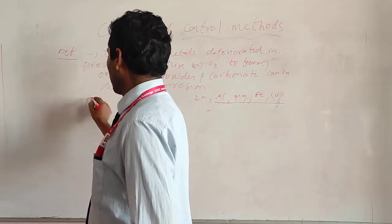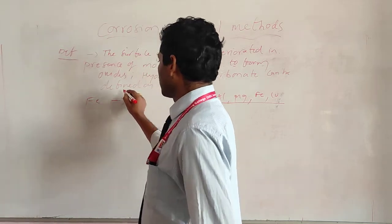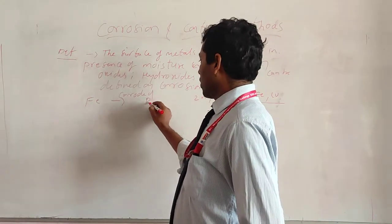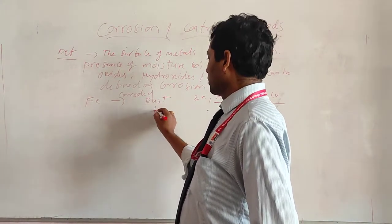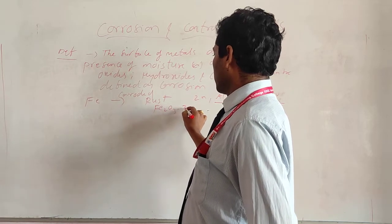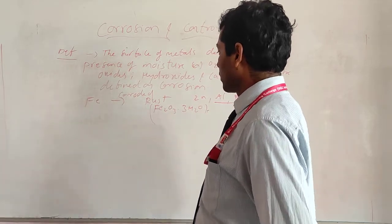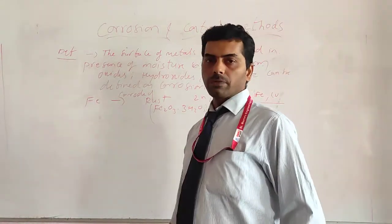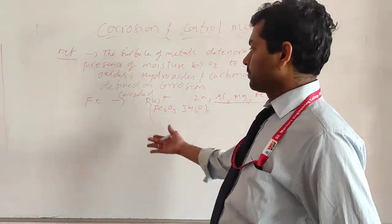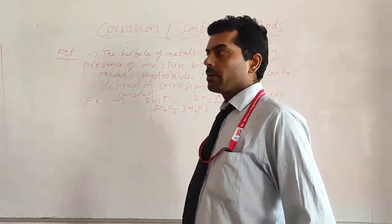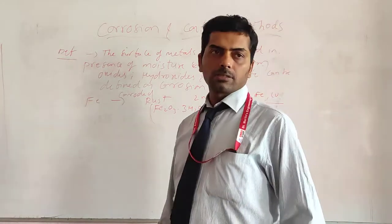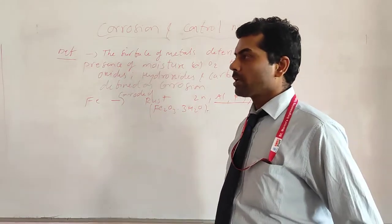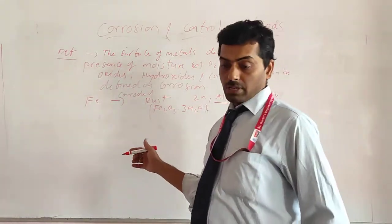For example, take iron. When iron is corroded, it is converted to its rust form: Fe₂O₃·3H₂O. This is the rust formula — the corroded form of iron. Iron metal, which is used in preparation of different equipment like railway tracks, water tanks, or oil tanks, when exposed to environmental impact, undergoes formation of rust.